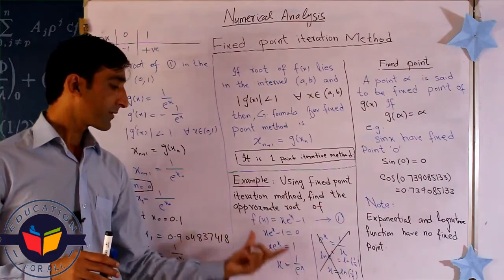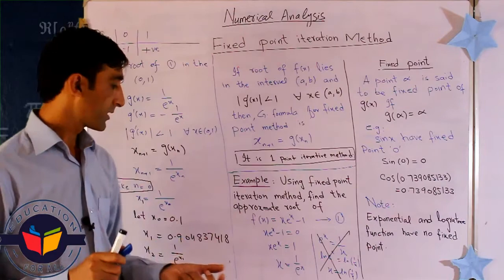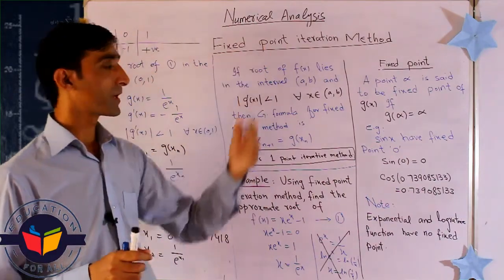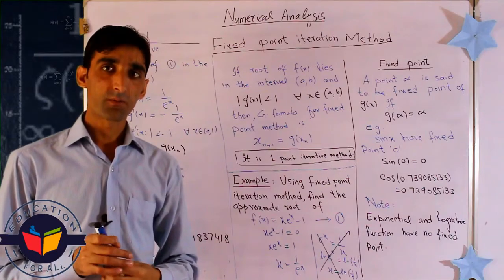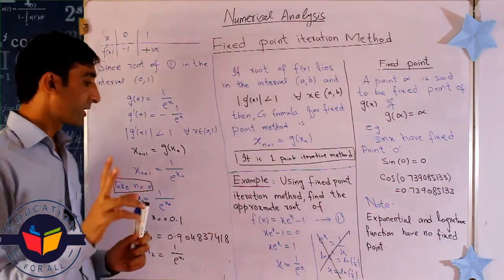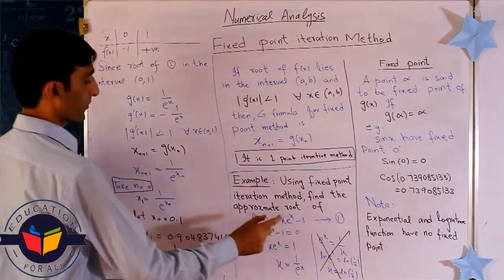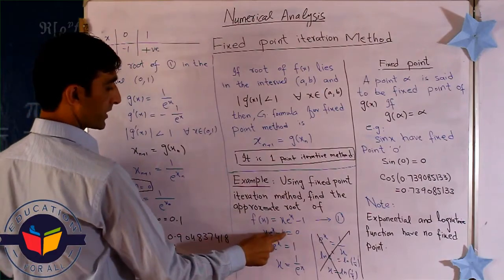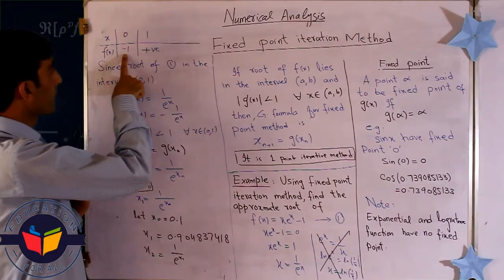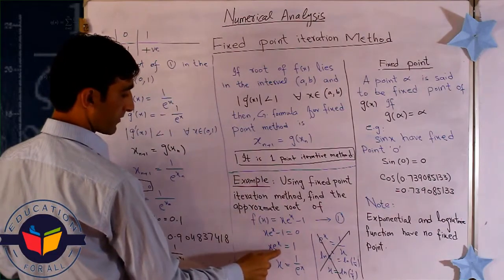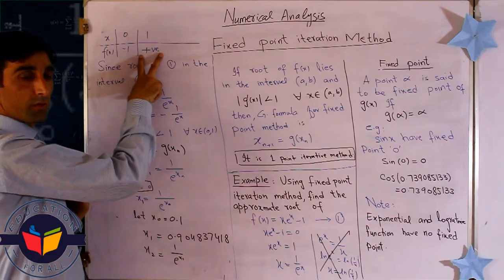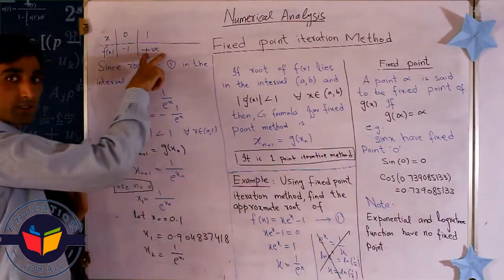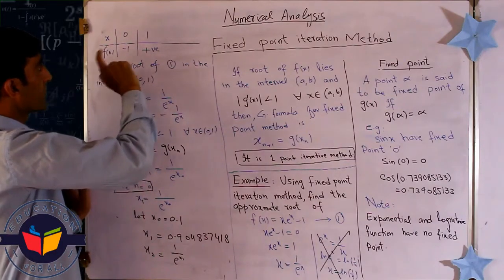We have two different values of g(x) — x = 1/e^x and x = ln(1/x). To decide which is best for the fixed point iterative method, we first find the interval where the root lies. Substituting 0 gives a negative result and substituting 1 gives a positive result, so the root lies between 0 and 1.